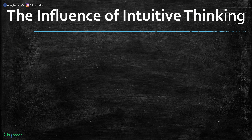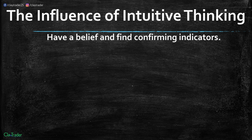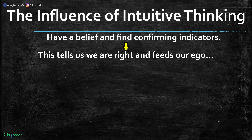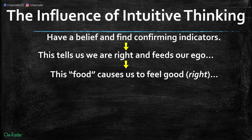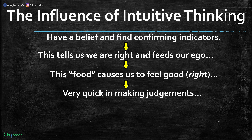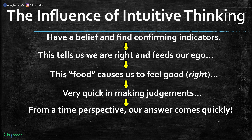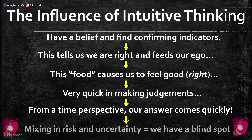This is the influence of intuitive thinking. You have a belief, find confirming indicators, which tells you that you are right and feeds your ego. That food causes you to feel good — because you are right — and being right makes you feel good and feeds your ego, leading to a very quick judgment. Your answer comes quickly, so you feel it must be right. But when you mix in risk and uncertainty, you have that blind spot. This is how confirmation bias filters through intuitive thinking.